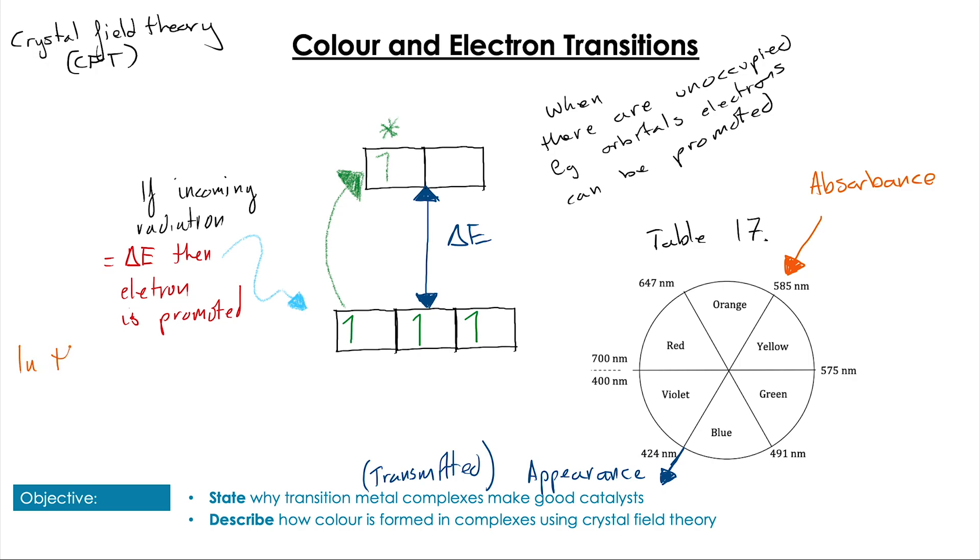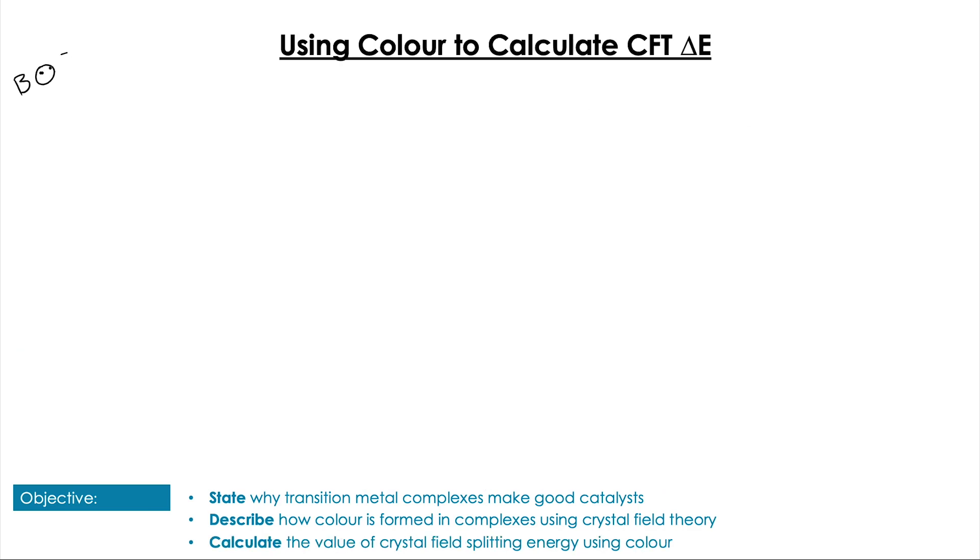We use table 17 in the data booklet to work this out. If we have an absorbance value of, let's say, 585 nanometers, then the appearance of that complex will be opposite to that on the color wheel. It will appear roughly violet-blue because all of the light transmitted will have an average of around that color.